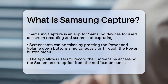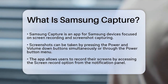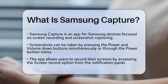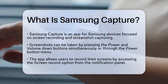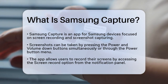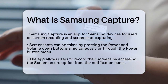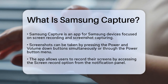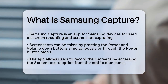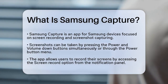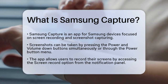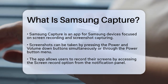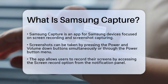One of the key features of Samsung Capture is its ability to take screenshots. You can do this by pressing the power and volume down button simultaneously, or in some cases by pressing and holding the power button and then tapping the screenshot option.